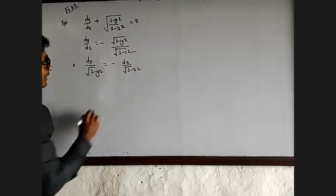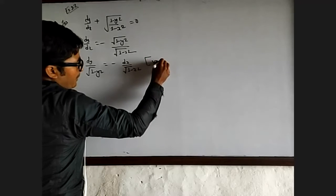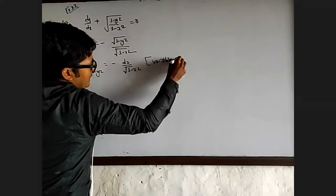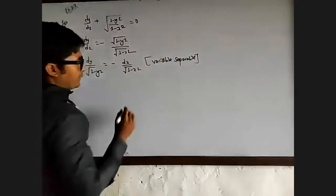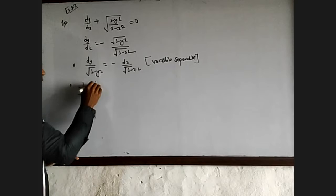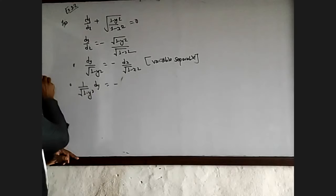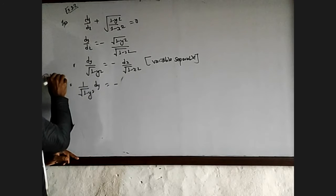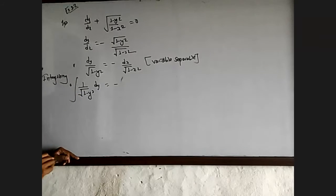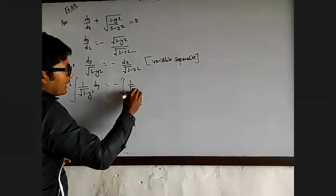One minus y squared. Another term is dx divided by the square root of one minus x squared. This is the variable separable form — separating the y variable. So 1 over the square root of one minus y squared dy, and integrating 1 over the square root of one minus x squared dx.